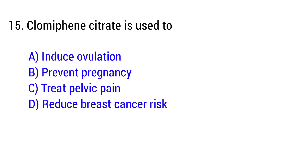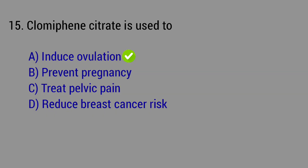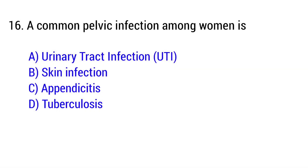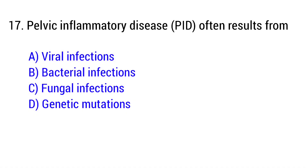Question number 15: Clomiphene citrate is used to — the right answer is Option A: Induce ovulation. Question number 16: A common pelvic infection among women is — the right answer is Option A: Urinary tract infection (UTI). Question number 17: Pelvic inflammatory disease (PID) often results from — the right answer is Option B: Bacterial infections.